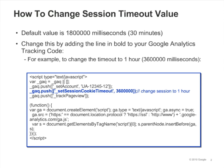In Google Analytics, a visit or session is defined by 30 minutes of inactivity or when a user quits the browser. You can change the 30-minute default by calling Set Session Cookie Timeout as shown in the slide. Simply specify a new timeout value in milliseconds as the argument to Set Session Cookie Timeout.